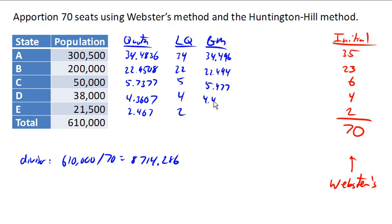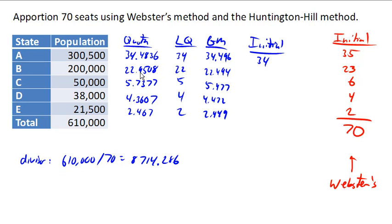The geometric mean is roughly 2.449. The initial allocation comes from comparing the quota to the geometric mean. Here the quota is less than the geometric mean; here the quota is bigger; here the quota's bigger; here the quota is smaller; and here the quota is bigger, so we round up. If we total those up, we get 70 seats.